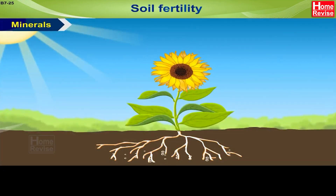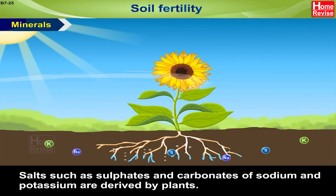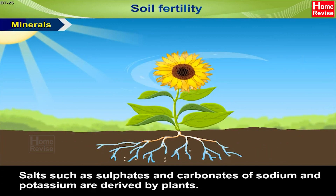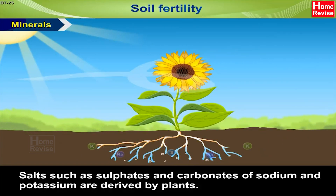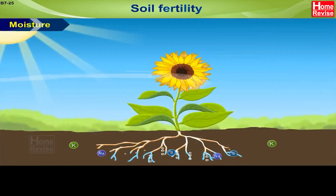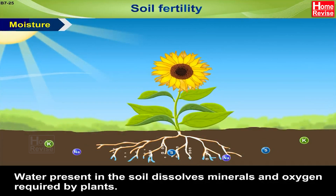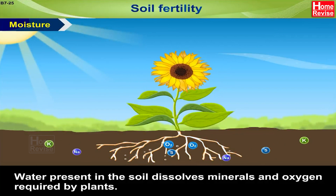Mineral salts such as sulfates and carbonates of sodium and potassium are derived by plants. Moisture — water present in the soil dissolves minerals and oxygen required by plants.